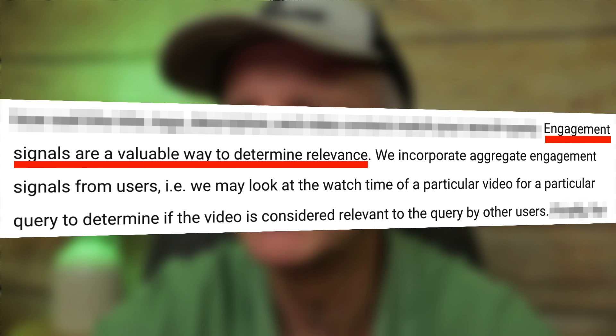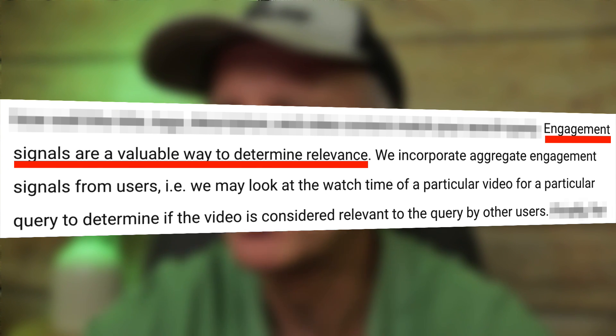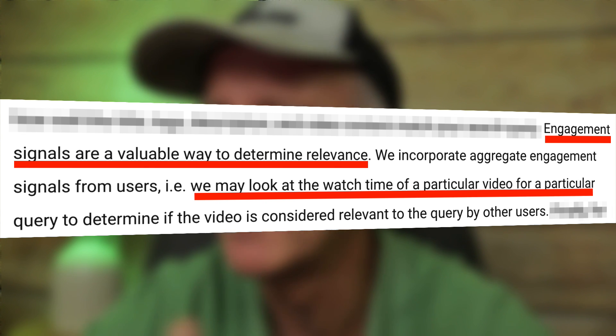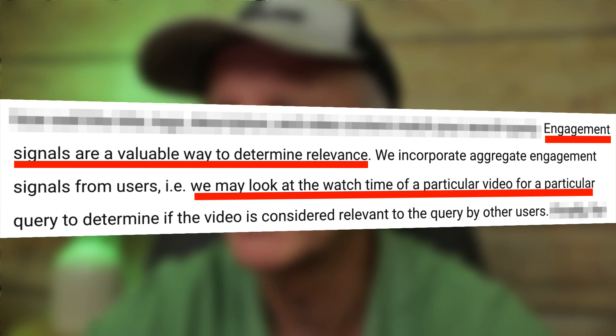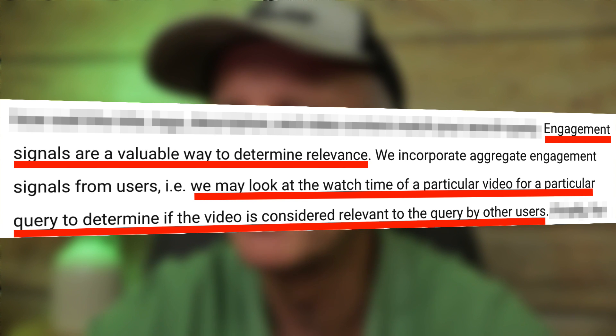The next factor that YouTube prioritizes for search is engagement. Engagement signals are a valuable way to determine relevance. YouTube incorporates aggregate engagement signals from users — for example, they may look at the watch time of a particular video for a particular query to determine if the video is considered relevant by other users. This means if viewers like your video and remain engaged throughout, it's more likely your video will appear in the search results.